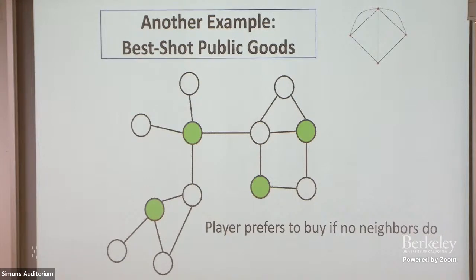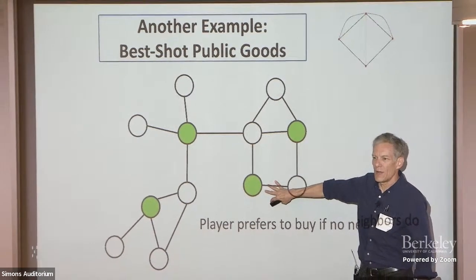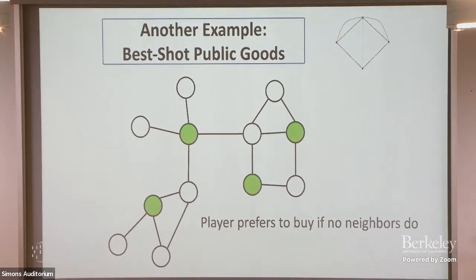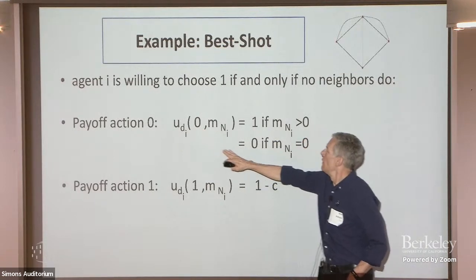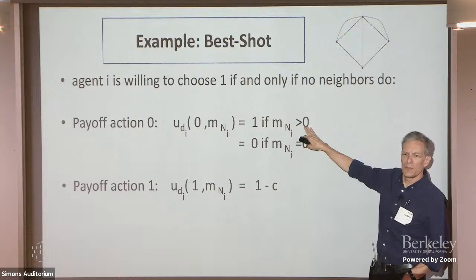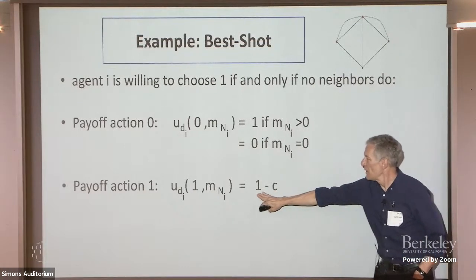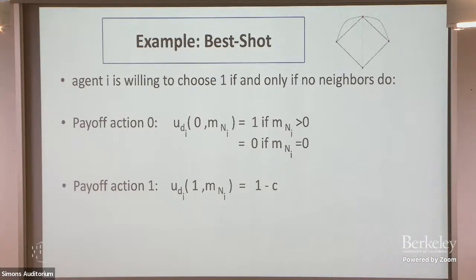This kind of game does not have a lattice structure — it's much worse behaved mathematically. Lattices are nice objects where you can take intersections and unions to find lower and upper bounds. Here, finding the full set of equilibria on a graph is an NP-hard problem. The payoff for the best shot game: if I don't buy the book and someone in my neighborhood has, I get benefit 1; if nobody has it, I get 0; if I buy it, I get 1 minus the cost C.